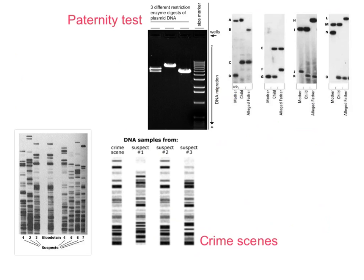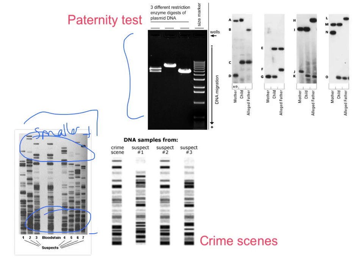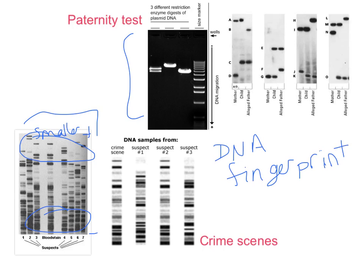The end product looks like a series of bands. The pieces closer to the negative end are bigger and heavier; the pieces farther down toward the positive end are smaller. What we've ended up with is called a DNA fingerprint. Because everybody's DNA is different, these DNA fingerprints — these banding patterns — are unique to each individual, just like the regular fingerprints on our skin.